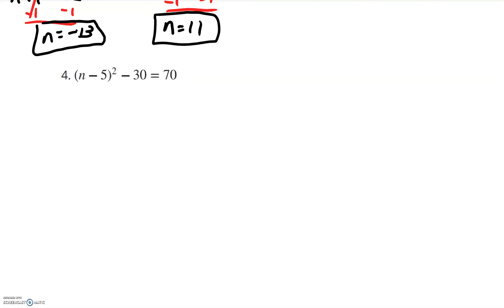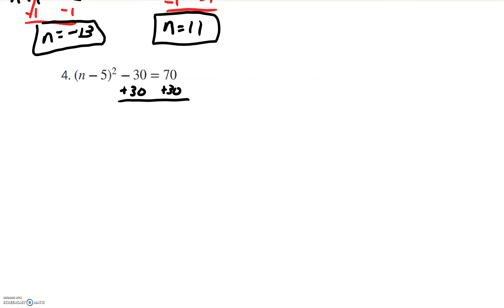We need to get something squared by itself. The something squared is this entire quantity, n minus 5. I need to get rid of that subtract 30 first. How do you get rid of subtract 30? We add 30, because we undo subtraction with addition. The subtract 30 and the plus 30 cancel on the left, leaving me with the quantity (n minus 5) squared is equal to 70 plus 30, which is 100.